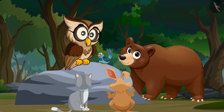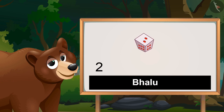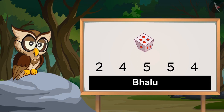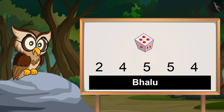Now Balu, it's your turn. Okay — two, four, five, five, five, four. So Balu got these numbers on the dice.